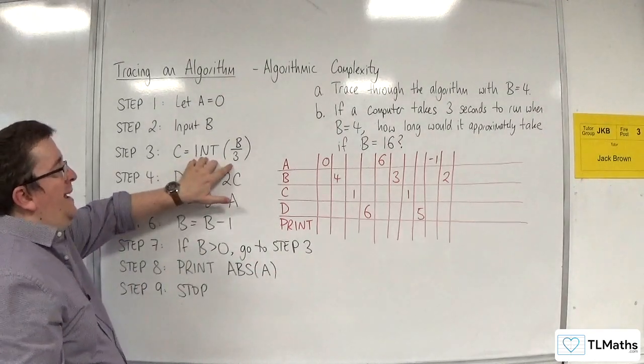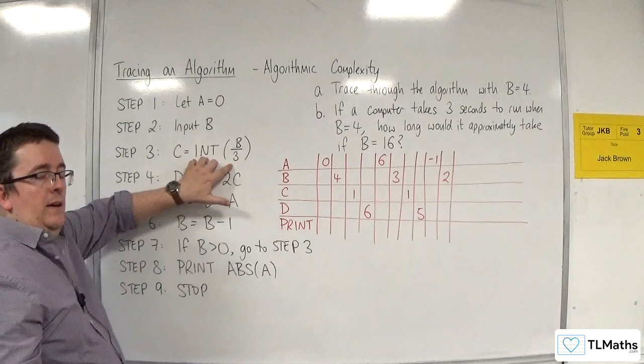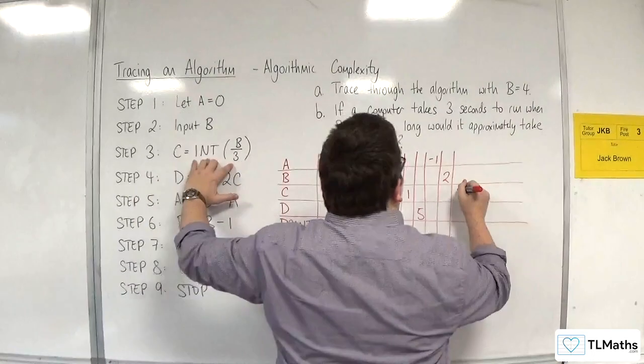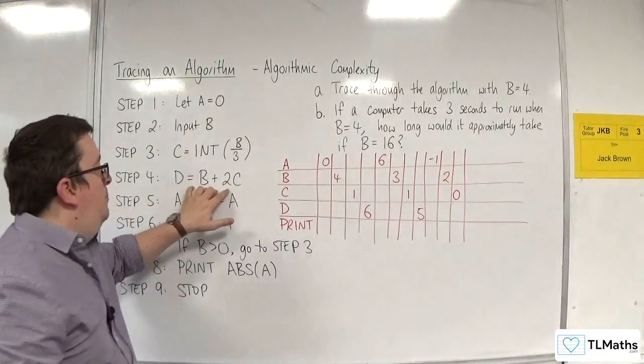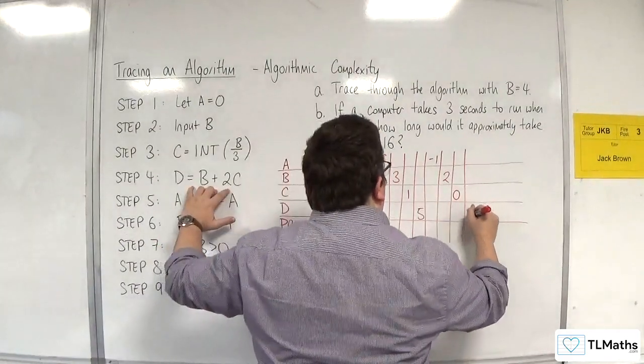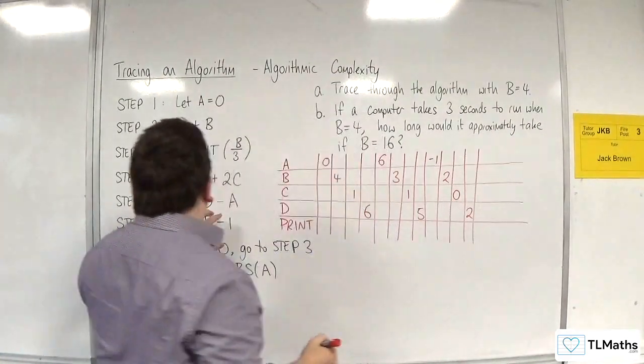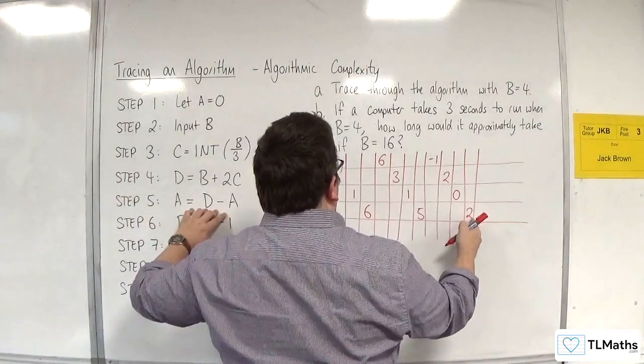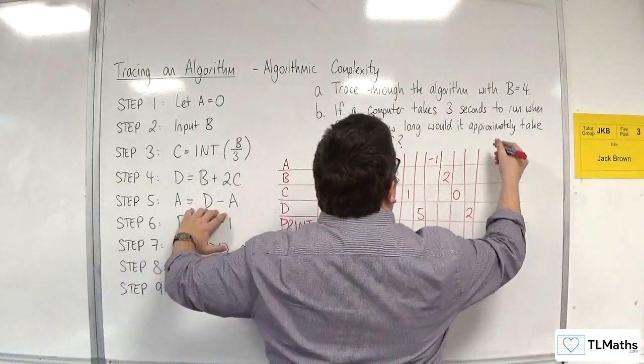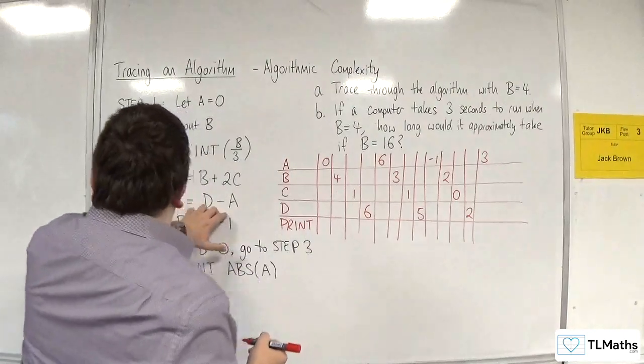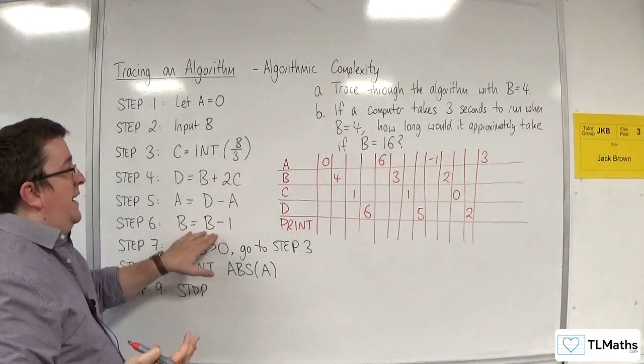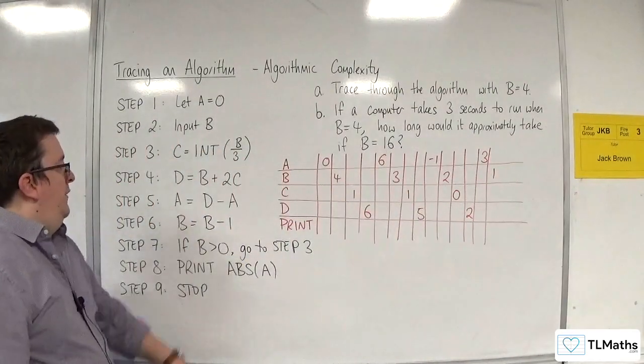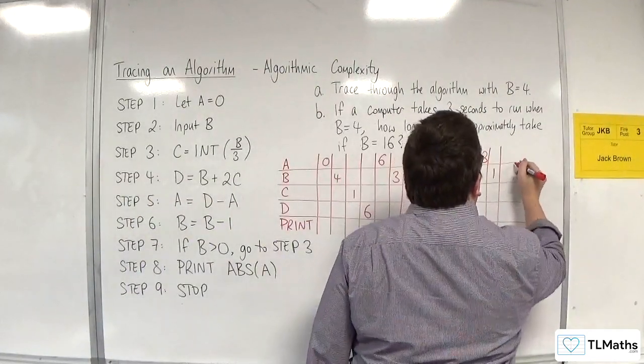So, I need to go to the integer part of b over 3. So, 2 thirds, integer part of that is just going to be 0 because 0.6 recurring. So c is 0. D is b plus 2 lots of c, so that would just be 2. A is d take away a, so d, 2, take away a, so that gets us to 3. B is b take away 1, so that reduces it down to 1. If b is greater than 0, well, it still is. So, I need to keep going.